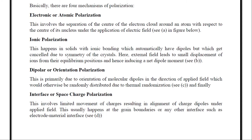The third type is dipolar or orientation polarization. This is primarily due to orientation of molecular dipoles in the direction of the applied field, which would otherwise be randomly distributed due to thermal randomization. Without an external field, molecular dipoles in a solid are arranged randomly, resulting in no net dipole moment. When a field is applied, the molecular dipoles align in the direction of the applied field, creating a net electric dipole — this is called orientation or dipolar polarization.